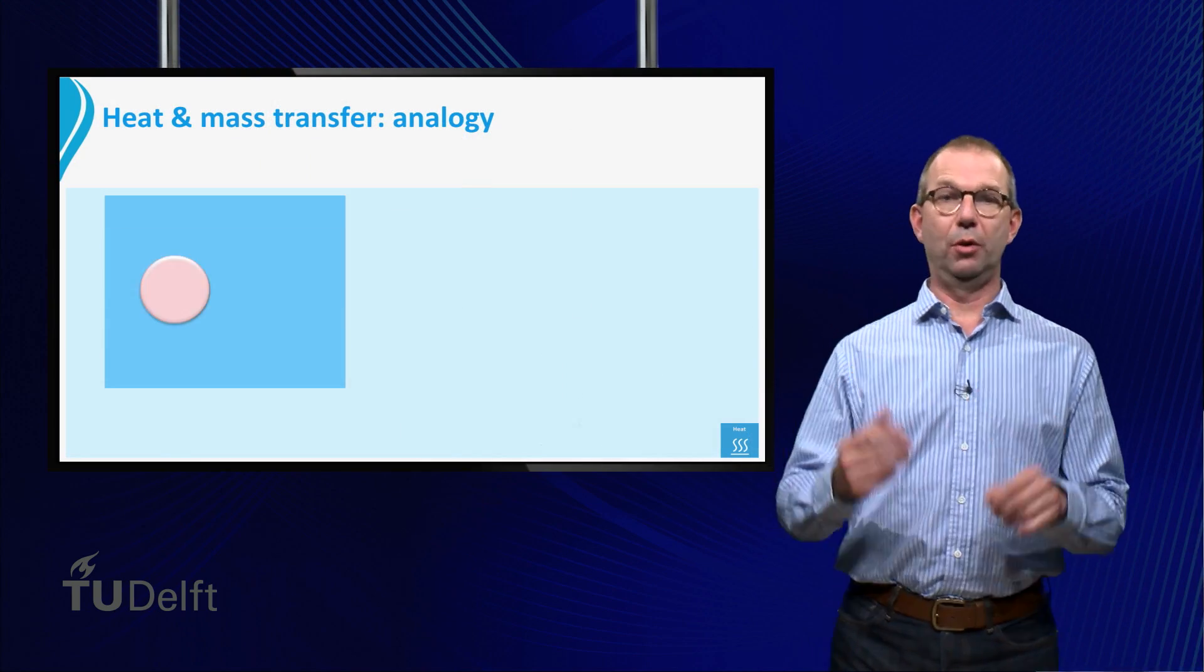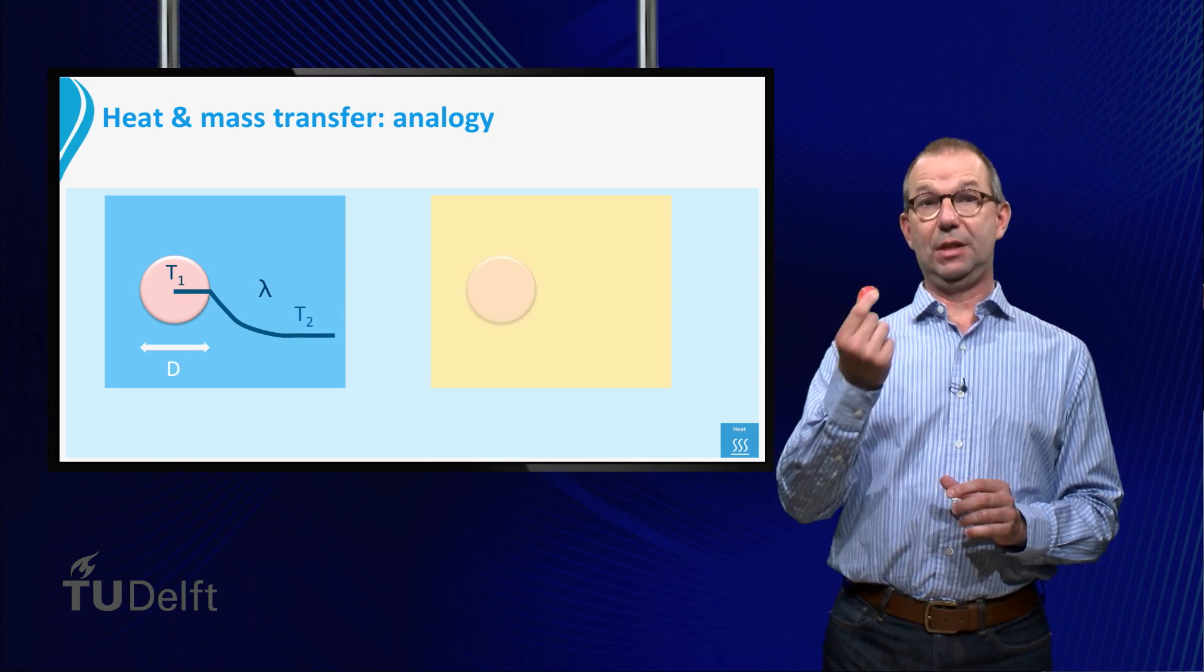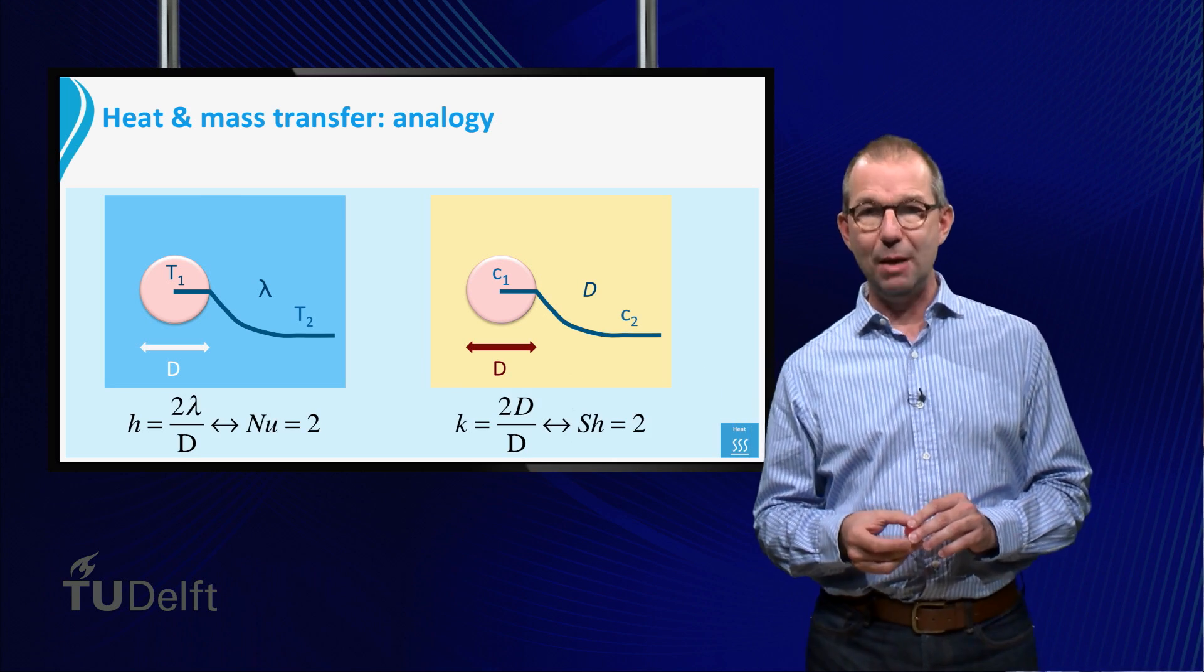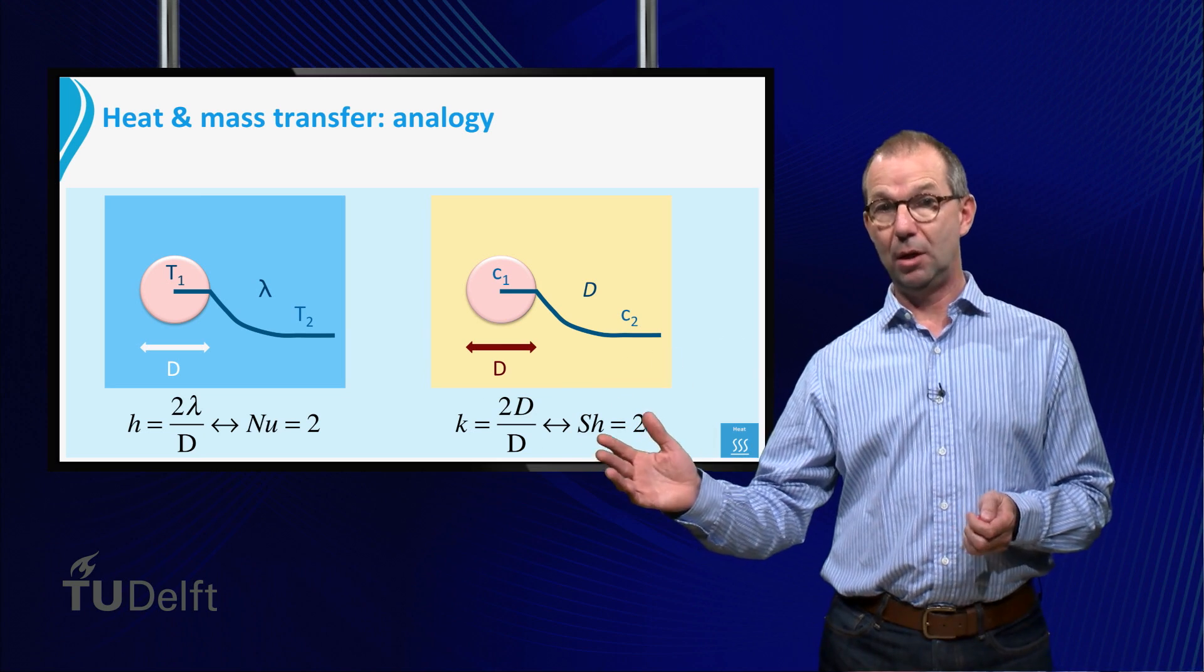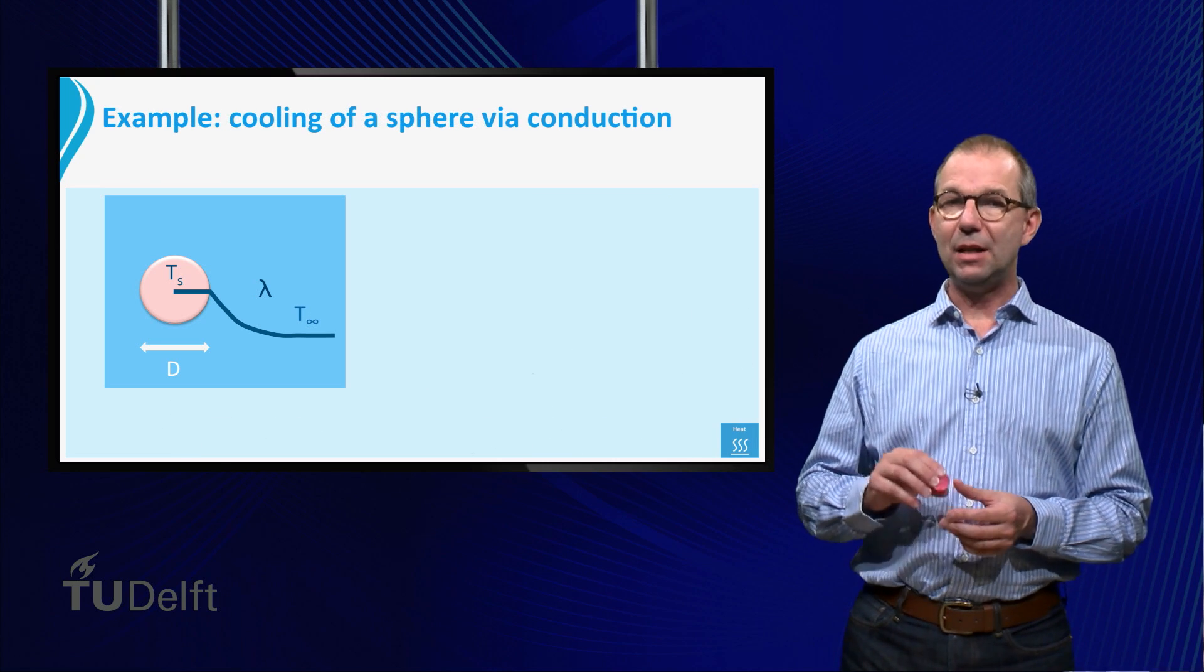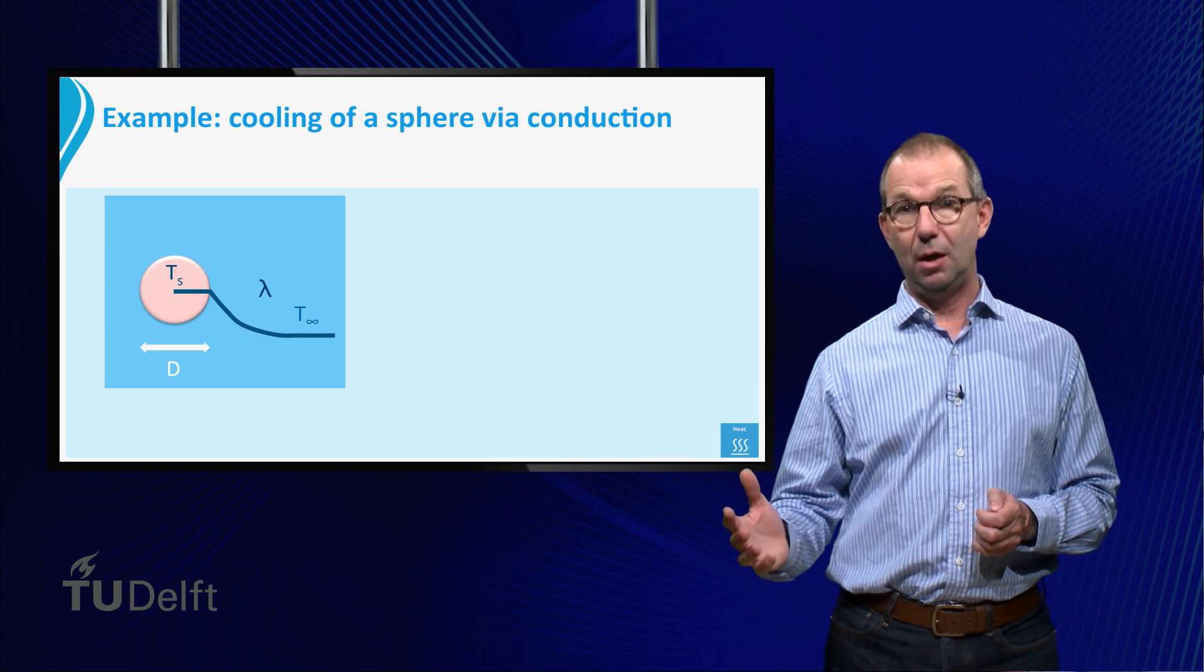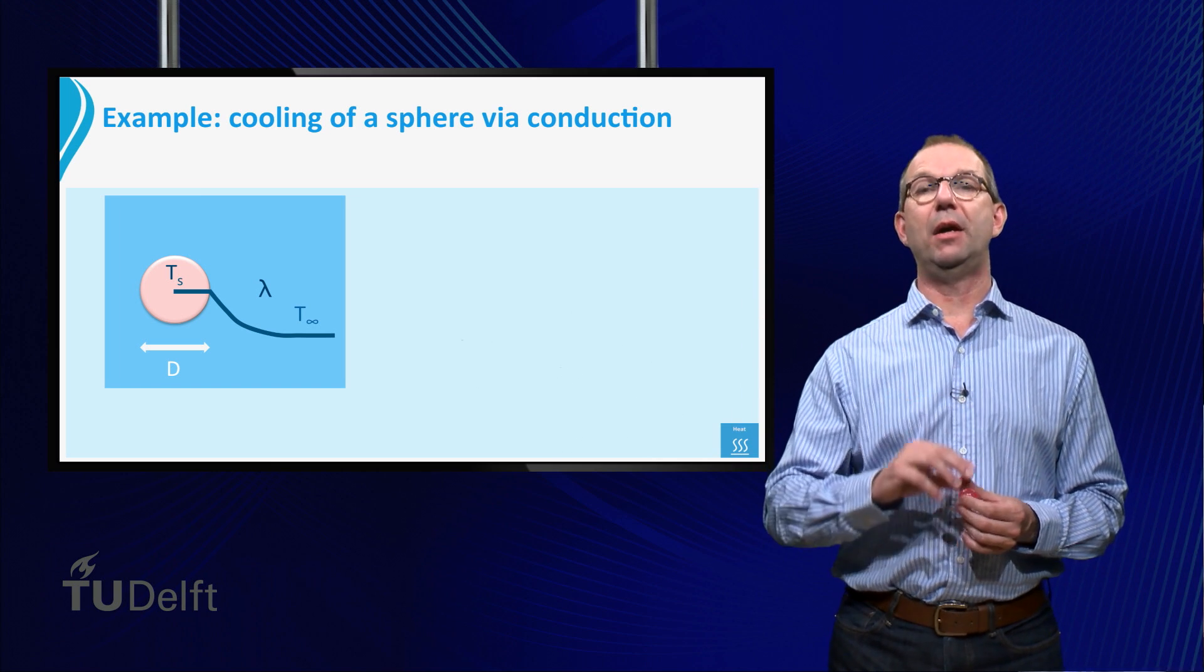The analogy goes on. Take a hot sphere that is cooling down via conduction. We found Nusselt is 2. We can anticipate that the same will hold for diffusion from a sphere into its surrounding. We indeed get Sherwood is 2. However, the analogy doesn't mean that a cooling sphere and a slowly dissolving sphere are in all respects the same. Let's check this via an example.